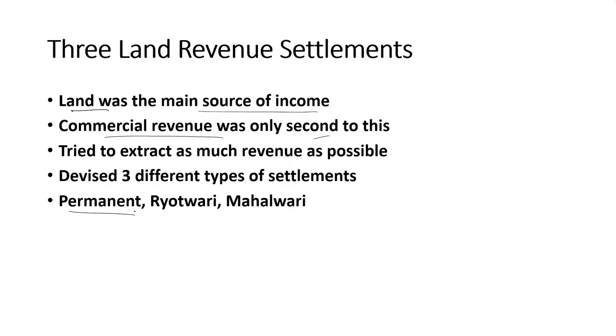In order to extract as much revenue as possible, the British introduced three different types of land revenue settlements in India. One was the Permanent Land Revenue Settlement. The second came to be known as the Ryotwari System of Settlement. And the third system came to be known as the Mahalwari System of Settlement.